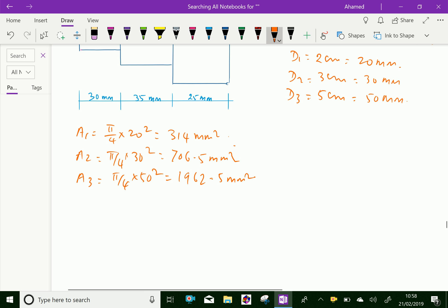Now, stress in section 1, sigma 1 equals P by A1. P is 40,000 over 314. 40,000 divided by 314 equals 127.39 Newton per mm square.